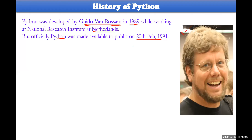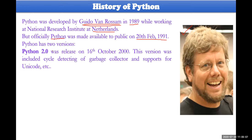Python has two versions. The first version is Python 2.0, and it was originally released on 16th October 2000.